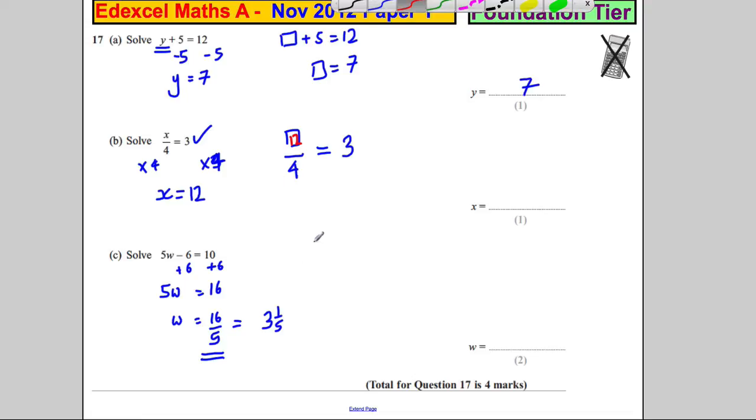Alternatively, you can use a flowchart method. You have this number w and the first thing you do to it is you multiply it by 5 to get 5w. And then what you do to it is you subtract 6, and you get 5w subtract 6, and you're told that equals 10.